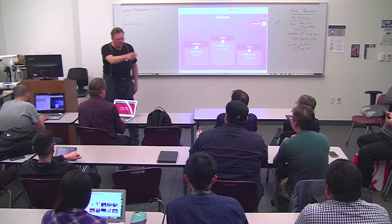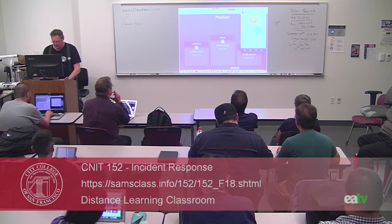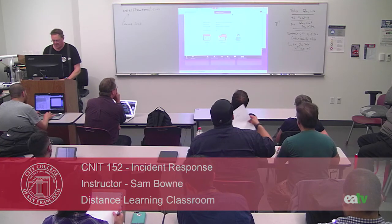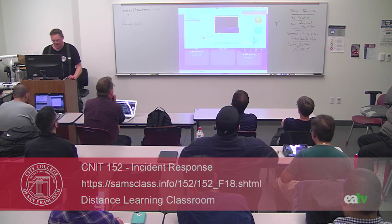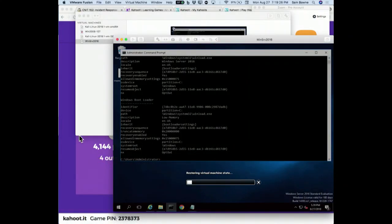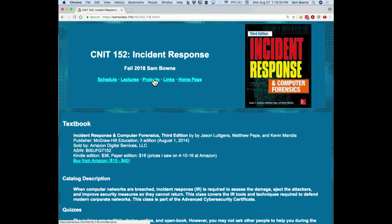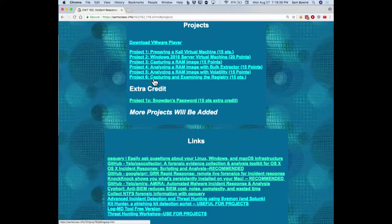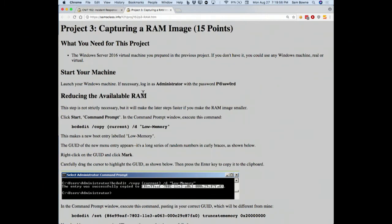Now I want to demonstrate Project 3. I'll bring up my Windows machine and stop the Zoom share. Server 2016 runs very well with a very low amount of RAM — common for Microsoft Windows Server products. Making a small image is faster and easier, especially for Project 4. The point is we're going to get an image of the entire RAM and take a quick look at it.